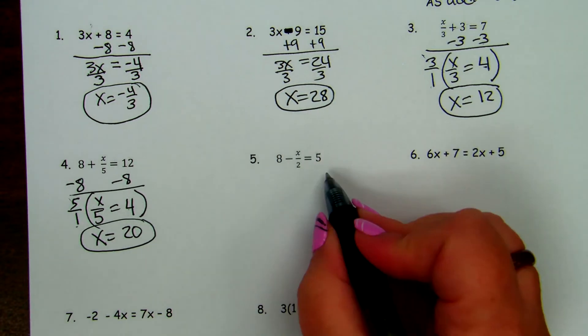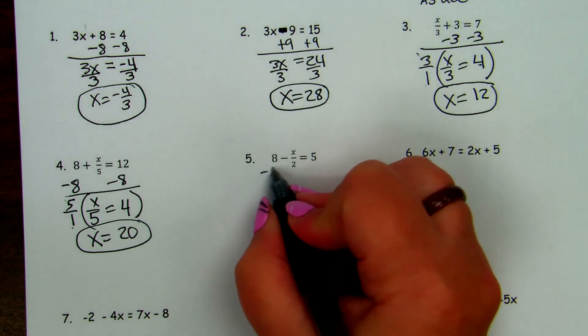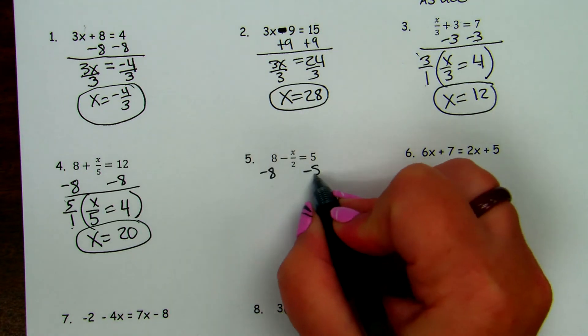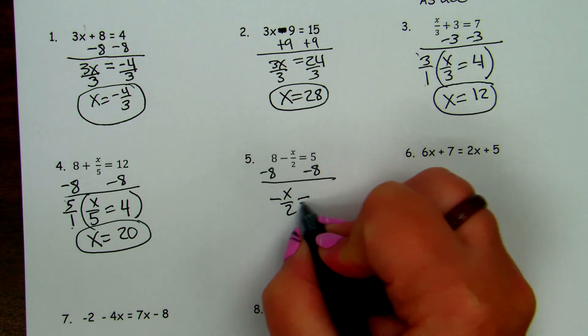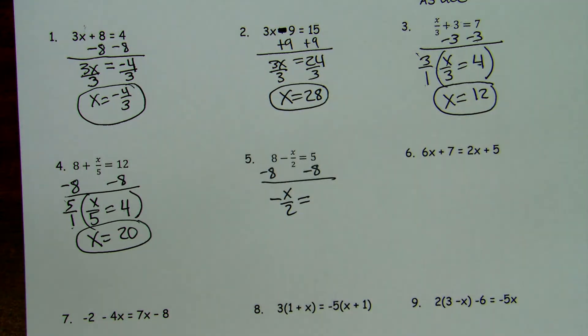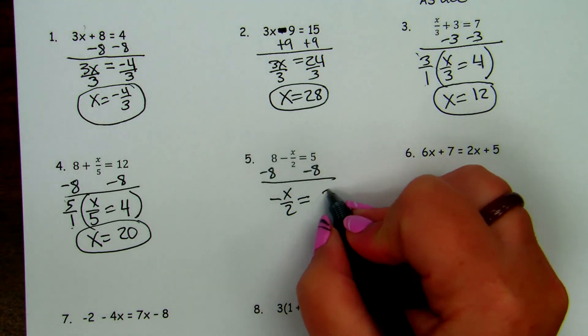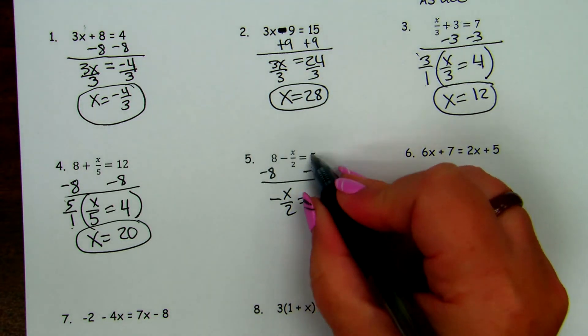So on number 5, we're going to subtract 8 first. 5 minus 8. So we're going to subtract because they're different signs. We're going to get a 3. And which one's bigger? 8. So it's negative 8.